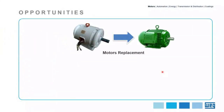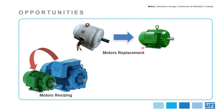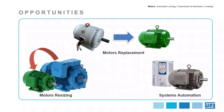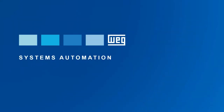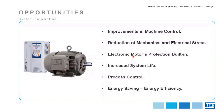If electricity is so important, how can we save it? First, we need to identify the opportunities. Some examples include replacing existing motors with new high-efficiency motors, motor resizing by applying motors as close as possible to the load demand — which will increase both efficiency and power factor — and applying a variable speed drive to the application, which is the main focus of this webinar. Beyond energy saving, other benefits of using a VFD include improvements in machine control, reduction of mechanical and electrical stresses, electronic motor protection built into the drive, and increased system life.